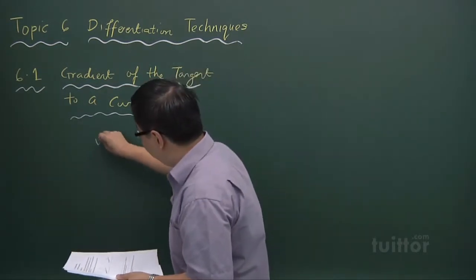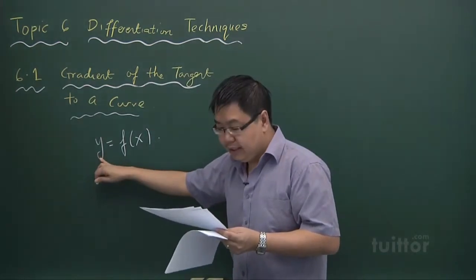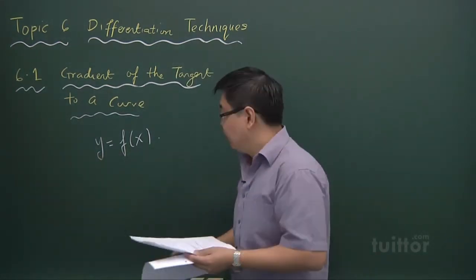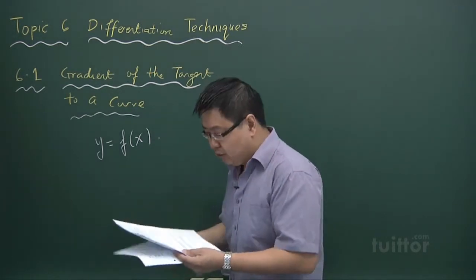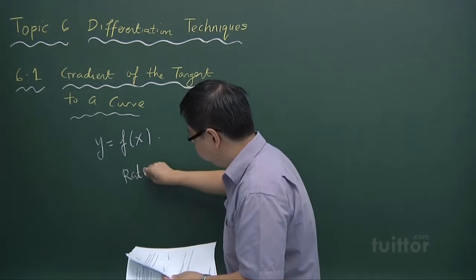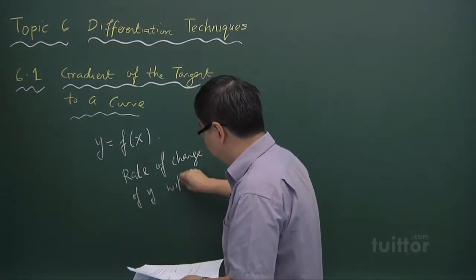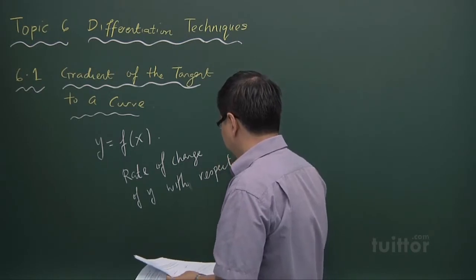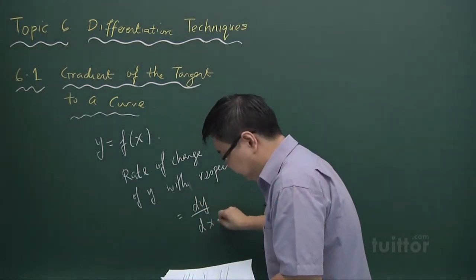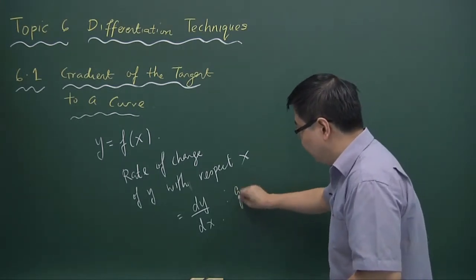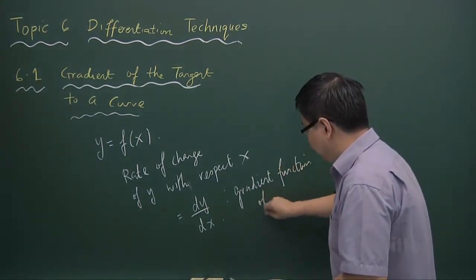Now in any function y equals fx, we probably are interested in the rate of change of the variable y as x changes. Because for example y may be actually a relationship of x, so what happens when x increases a little bit? What will y change? So that rate of change of y with respect to this variable x is what we call the differentiation. So it's actually the dy over dx. And this is also sometimes what we call the gradient function of y equals fx.